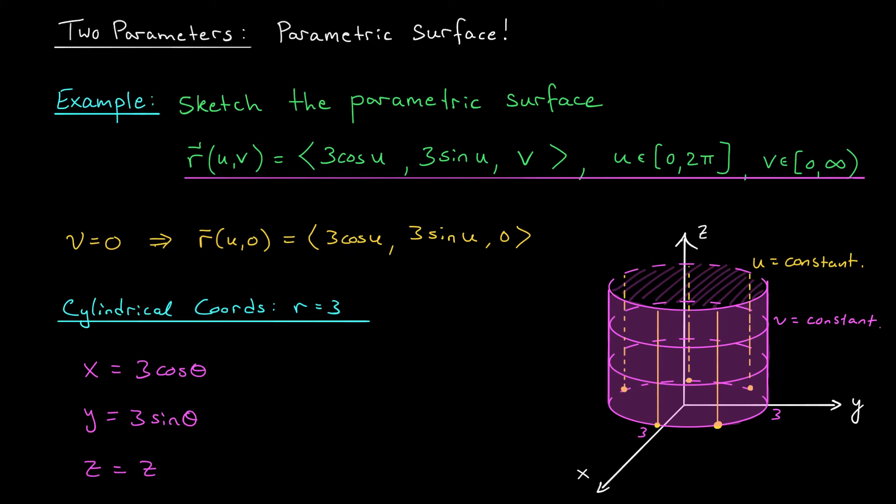So you can see we have two parameters that are naturally built into this coordinate system, θ and Z. We fixed the radius R. θ is allowed to range between 0 and 2π. You can go all the way around. And since we are not allowed to dip below the XY plane, Z could be any number greater than or equal to 0. There you go. There's your parametrization.